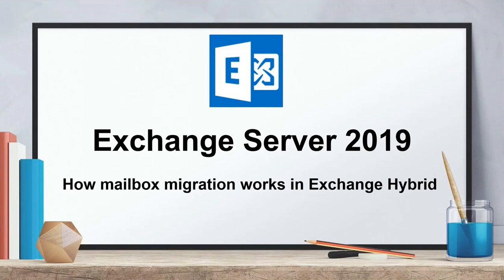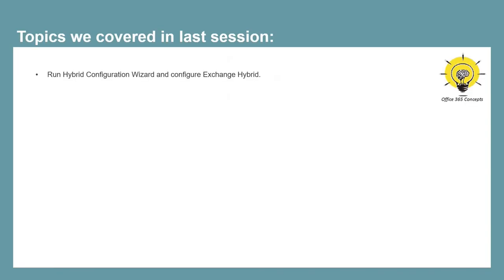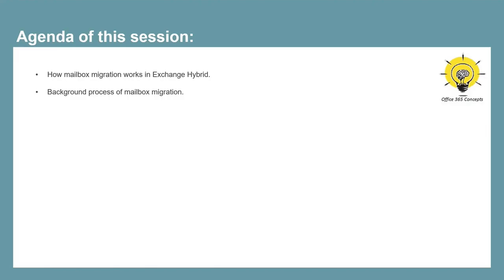Hi guys, welcome to the next video of this entire series of Exchange Server 2019. In the last video, we ran Hybrid Configuration Wizard and configured Exchange Hybrid between on-premise Exchange and Exchange Online. In this particular video, we will be discussing the Exchange Hybrid migration process — how exactly the mailbox migration process works, what services are responsible to migrate a mailbox, and what happens in the background when you migrate a mailbox from on-premise to Office 365 in Exchange Hybrid deployment.